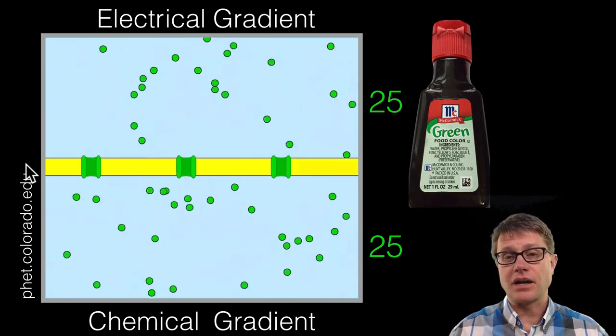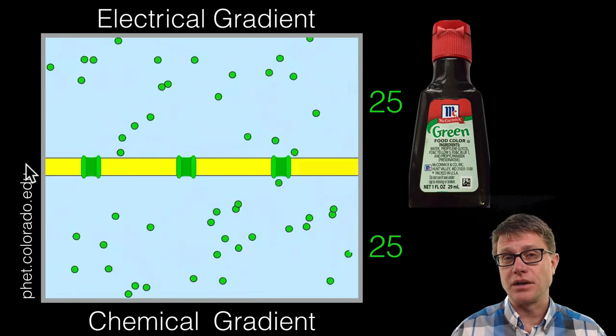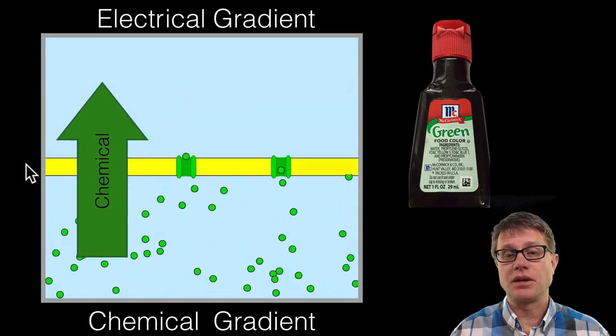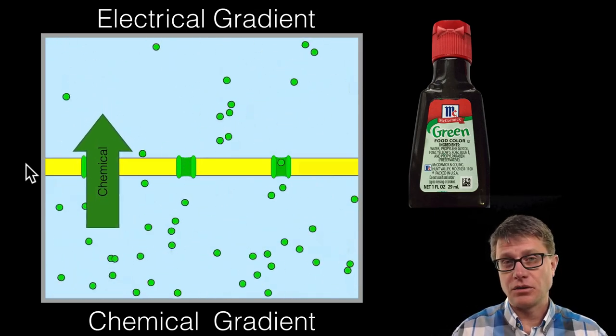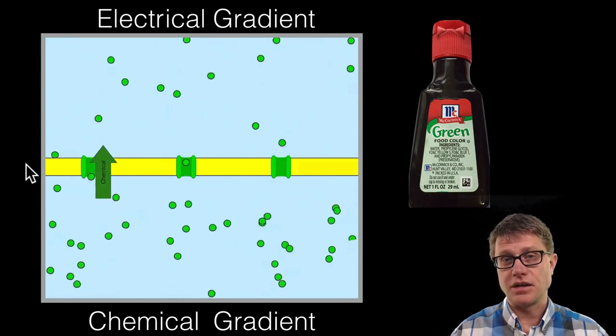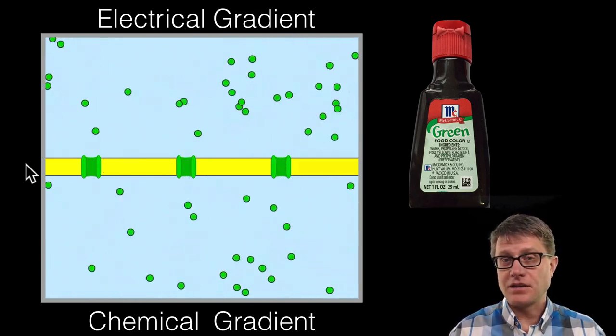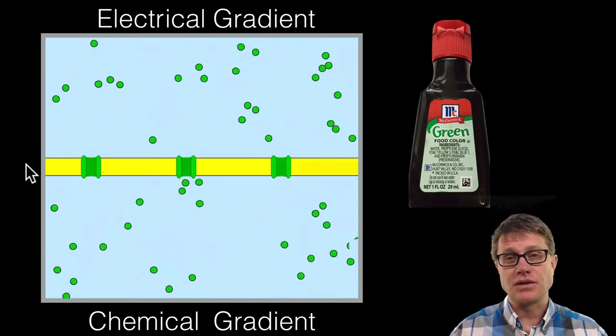Now they can still move back and forth, but that chemical gradient, that concentration gradient has gotten much, much smaller. And so when we started by opening up that channel, that chemical gradient continues to shrink as they move that random walk from the bottom to the top. That is diffusion. And it is real visual. You can see it.